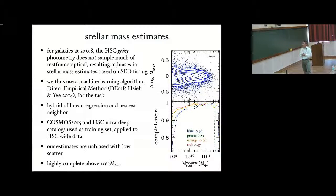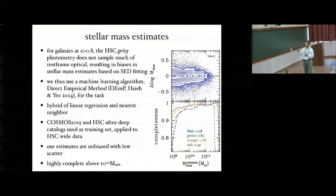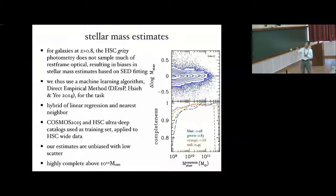And our projection is that by redshift 0, these clusters will evolve into clusters with mass between 6 to 10 times 10 to 14 solar masses. So we are talking about progenitors of present-day massive clusters here. In terms of stellar mass estimates, because for galaxies at redshift greater than 0.8, the HSC GR-IZY photometry doesn't really sample much of the rest frame optical. So using traditional SED fitting-based estimates will result in biases. And so we decided to use a machine learning algorithm called DEMP to derive the stellar mass, which is basically a hybrid of linear regression and nearest neighbor methods. We use the COSMOS catalog as a training set and apply the trained network to the HSC-wide data. And the comparison with the COSMOS stellar mass shows that our estimates are unbiased and the scatter is low. And we are highly complete above a stellar mass of 10 to 10 solar masses.